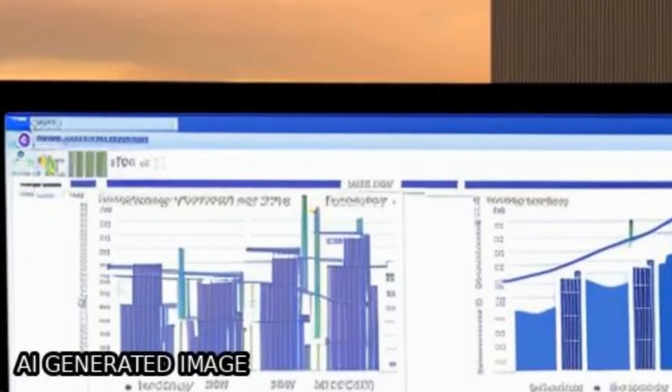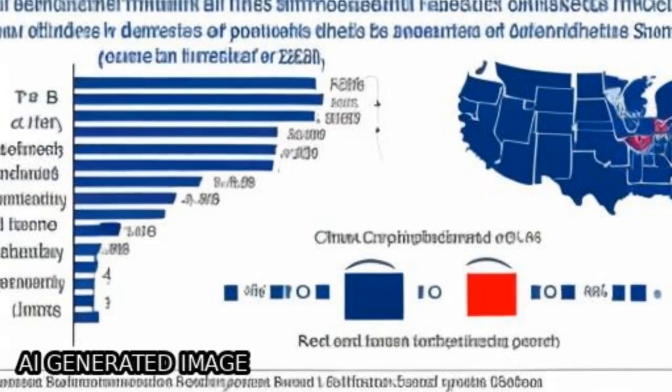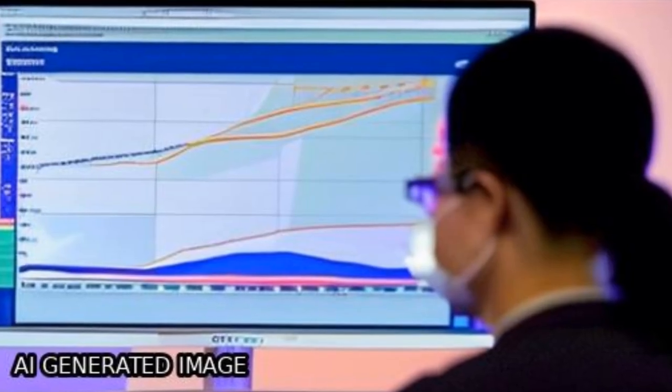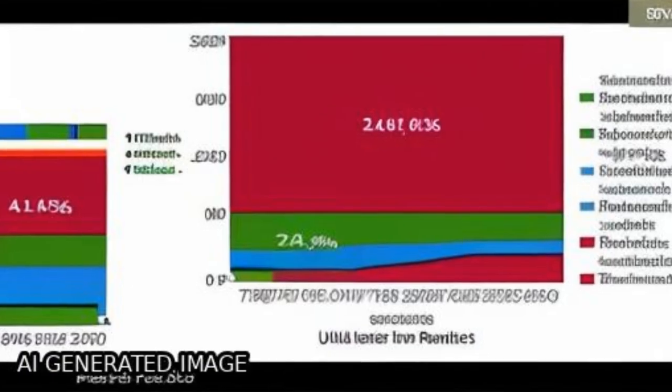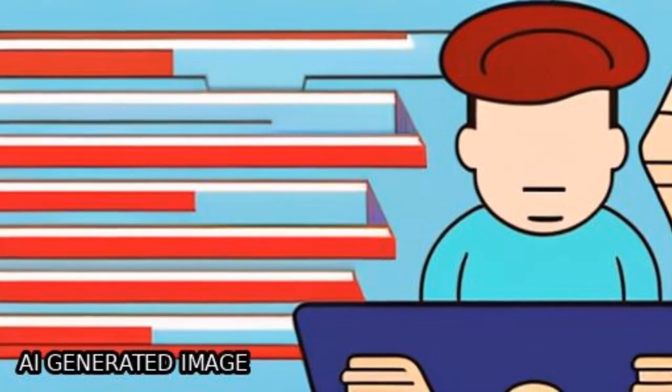The decreasing cancer burden in liver, stomach, and esophagus, and increasing burden in lung, colorectum, breast, and prostate mean that cancer profiles in China and the USA are converging.